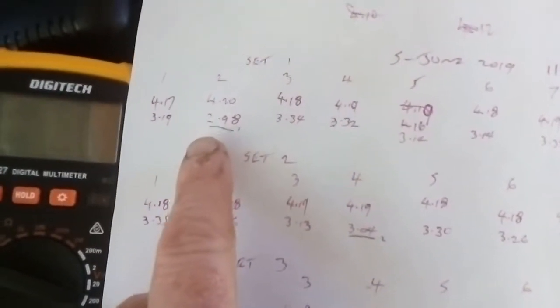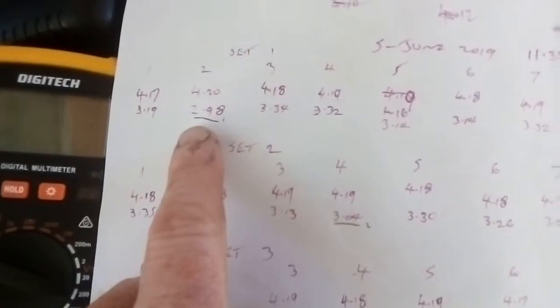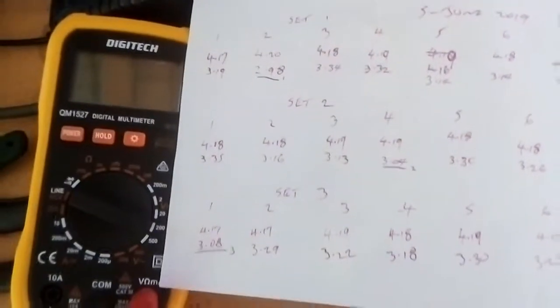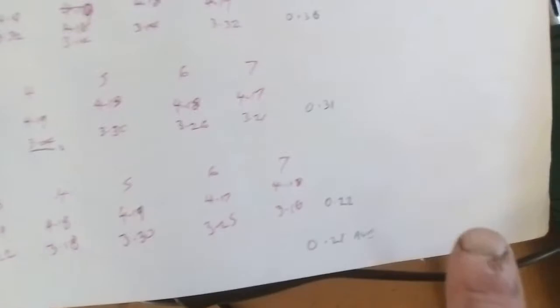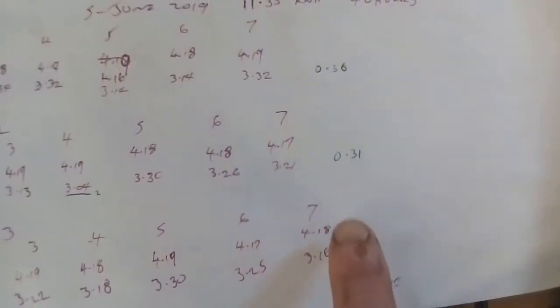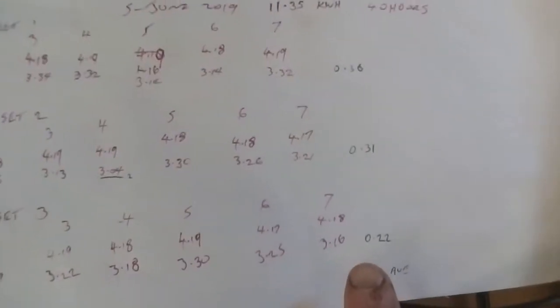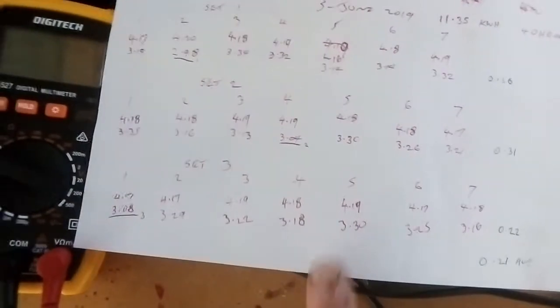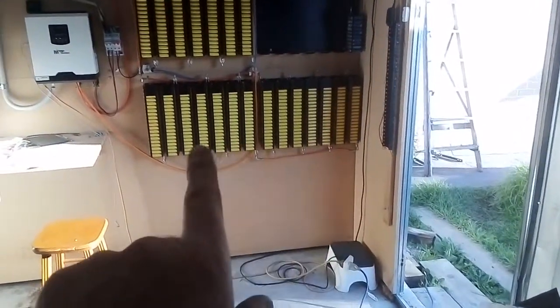...point nine eight (2.98V) was the lowest, and the next two banks were 0.31 volt difference and 0.22 volt difference. I'm surprised with set three because it is the newest pack I've made. That's supposed to equal that one. On paper those are 7S to those 7S, but either way, very good.